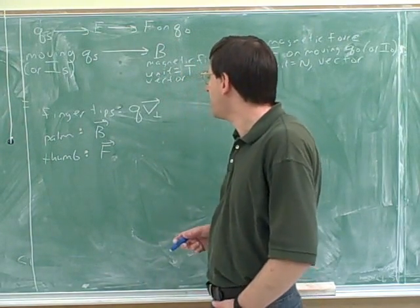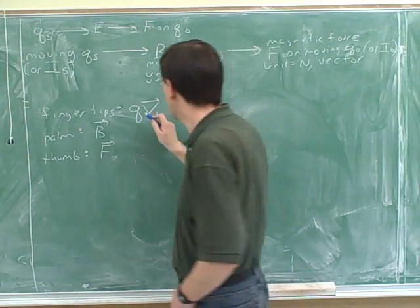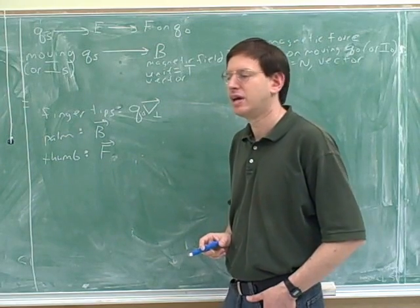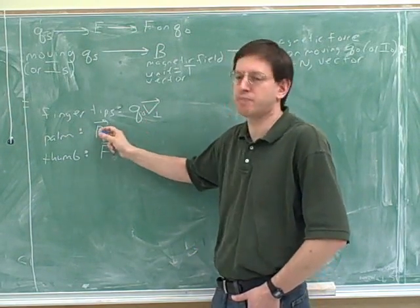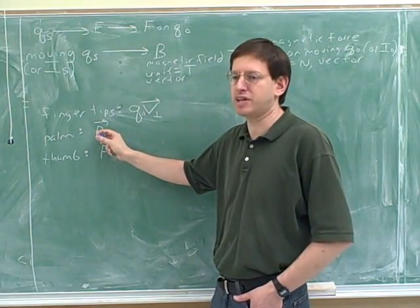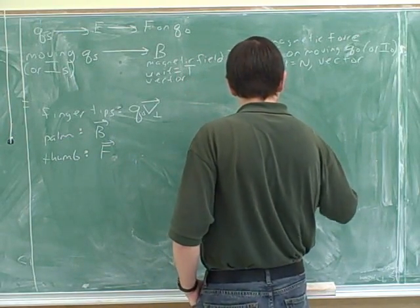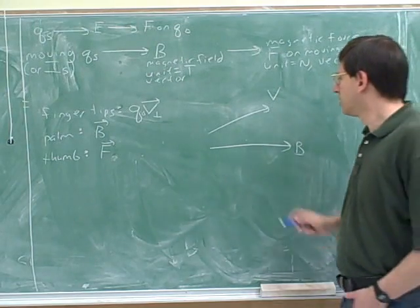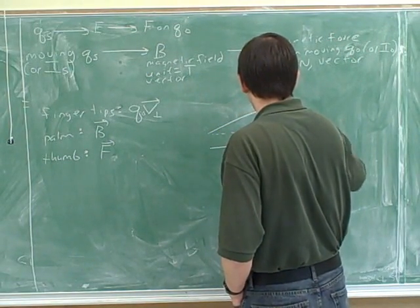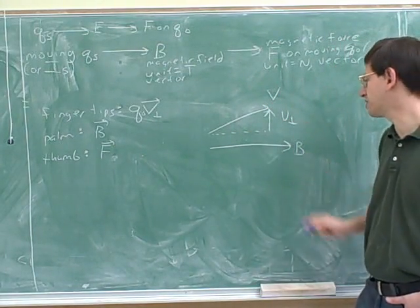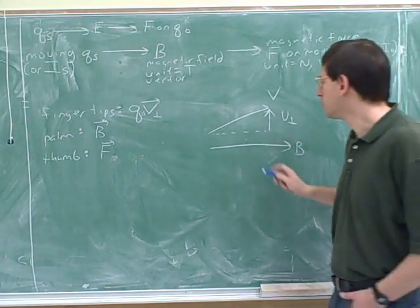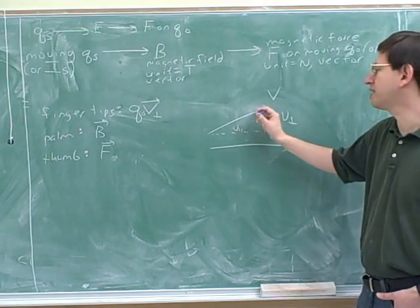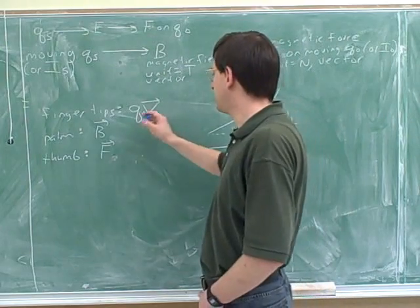Let's go through this now. This here stands for the velocity of the moving charge — I'll put a zero here because this is a test charge. We only care about the component of the velocity that is perpendicular to the magnetic field. This little symbol shows the component of one vector that's perpendicular to another. So we focus on the component of velocity that's perpendicular to B, and ignore v-parallel.